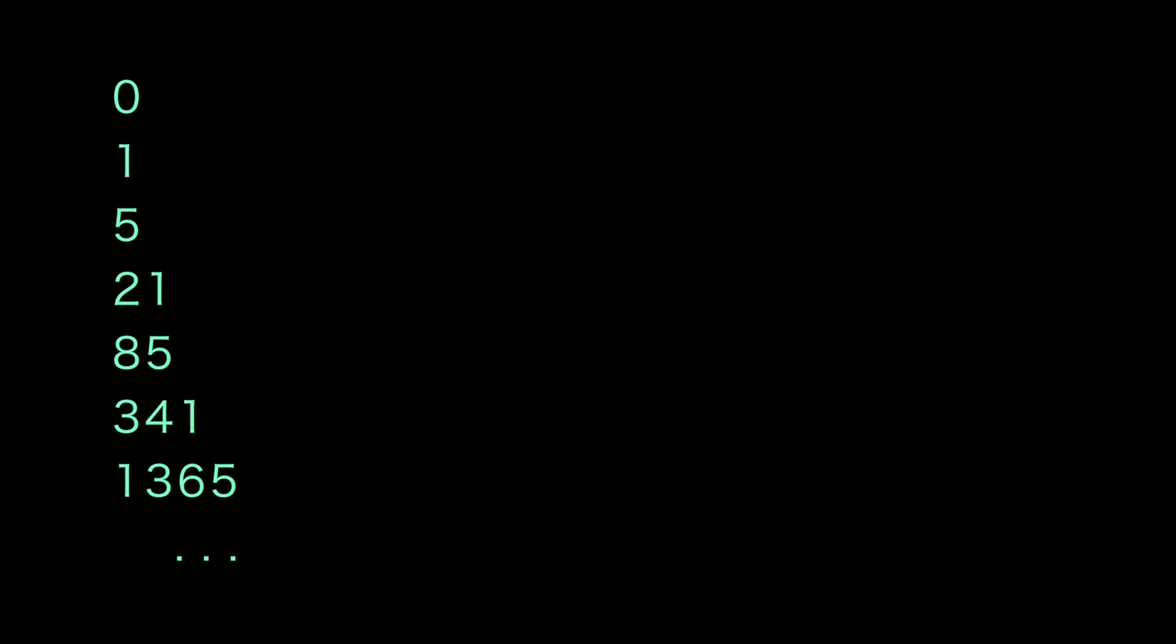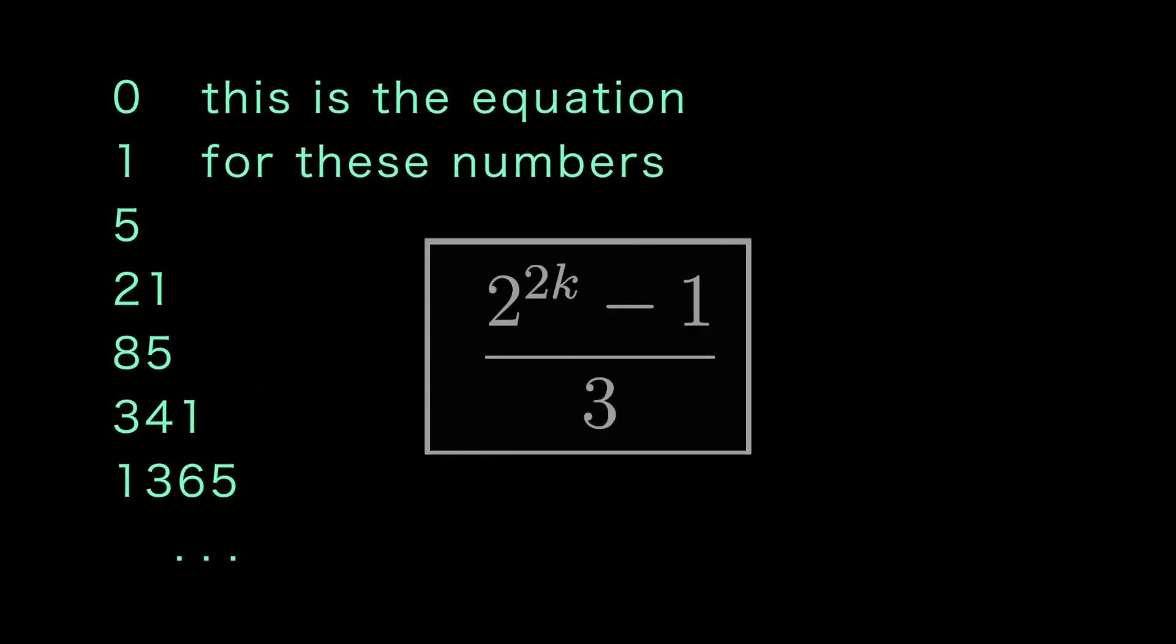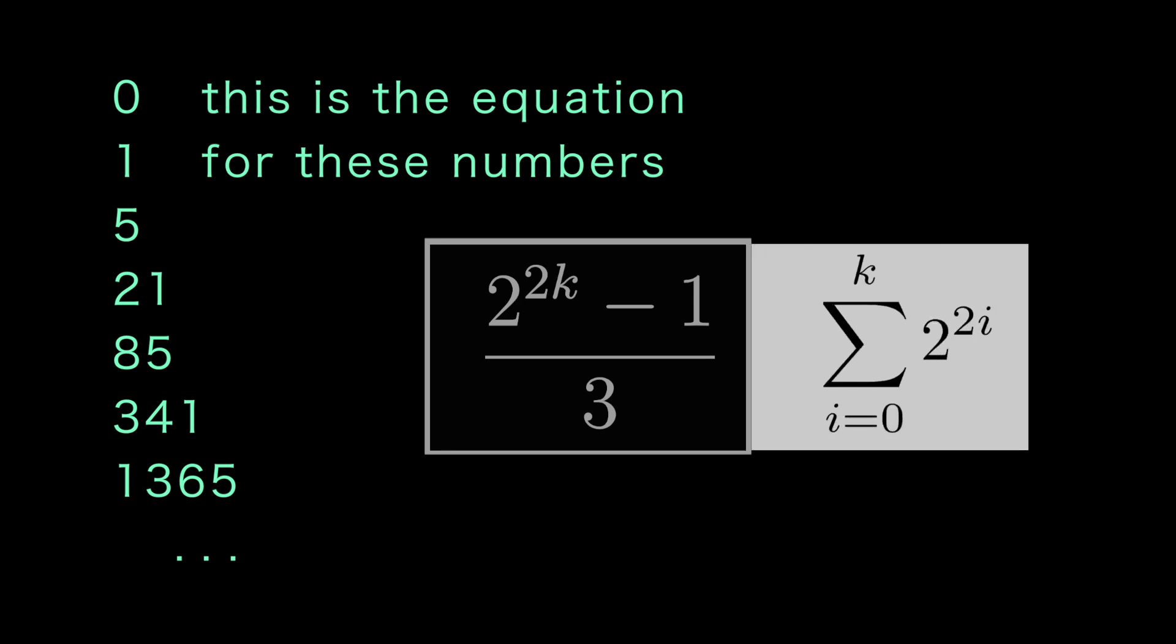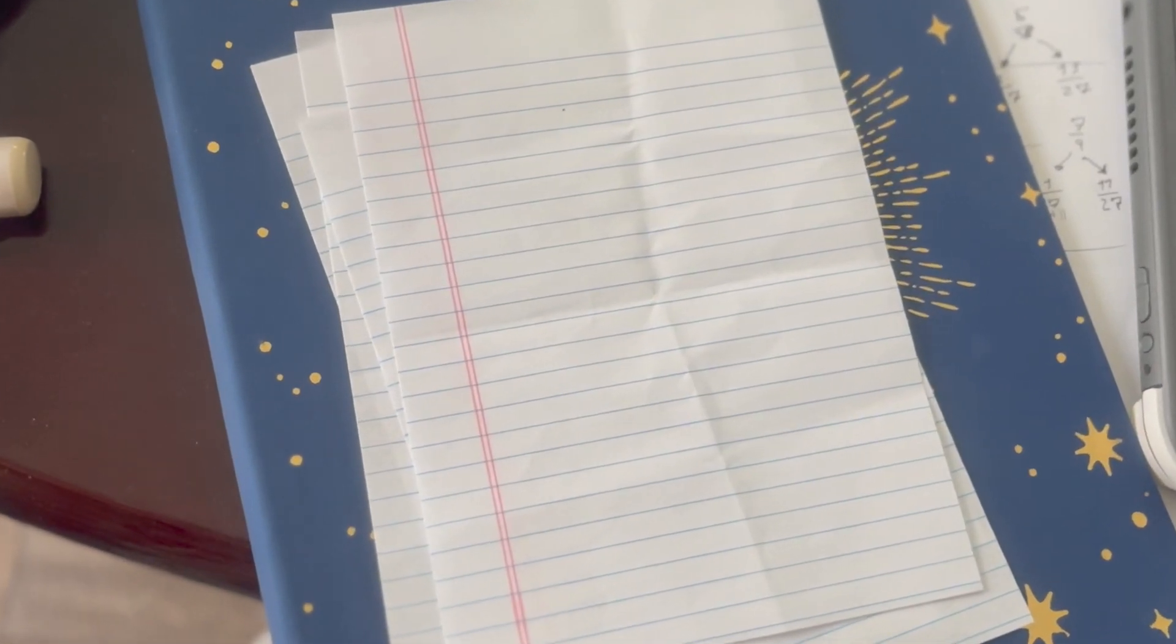And this is where things start to get fun, but first you need this set of numbers. So it's 0, 1, 5, 21, 85, 341. Basically it's just the sum of the even powers of two. So like 1 plus 4, 1 plus 4 plus 16. But this set of numbers, this set is so important because you can take any odd integer.